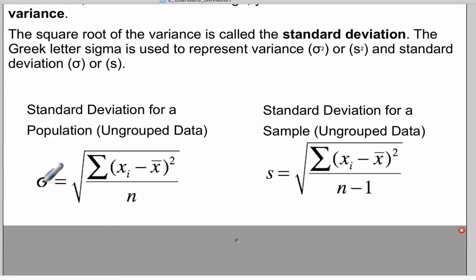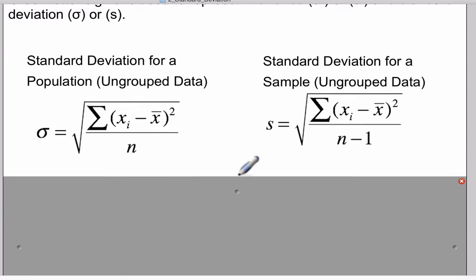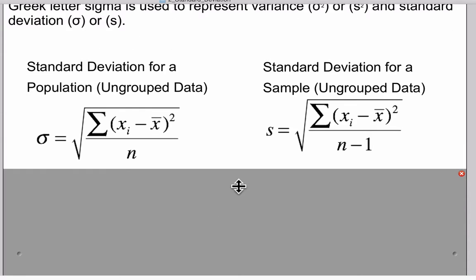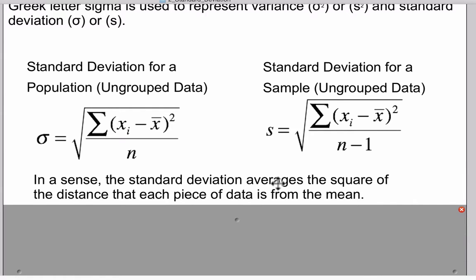The standard deviation is equal to—if you add up all of the values, subtract the mean and then you square that, add those all up, divide by n in the case of a population, n minus one in the case of a sample, and then take the square root of that value. That is the standard deviation. In a sense, the standard deviation averages the square of the distance that each piece of data is from the mean.